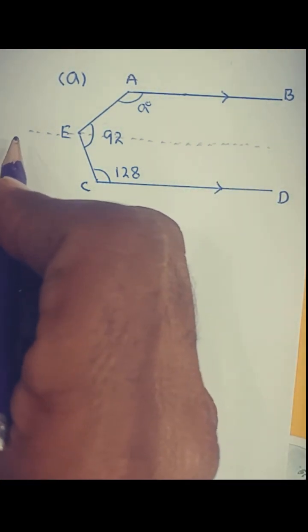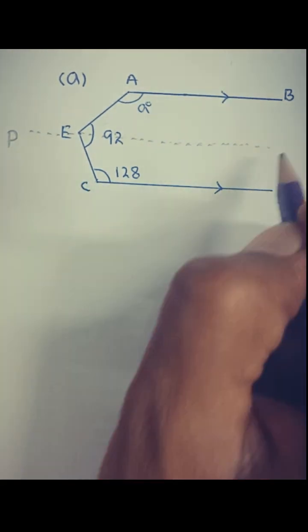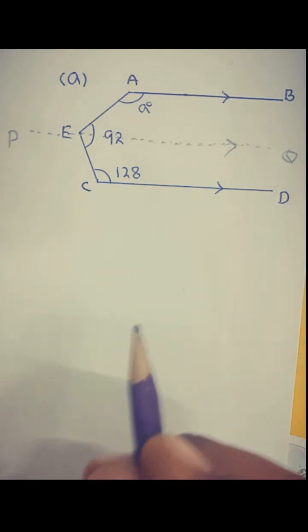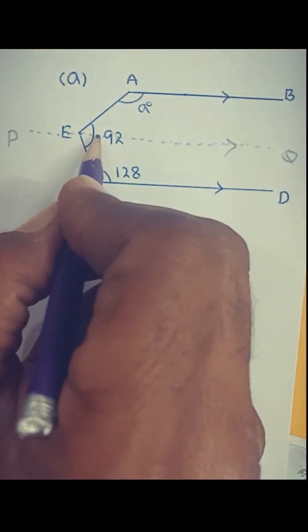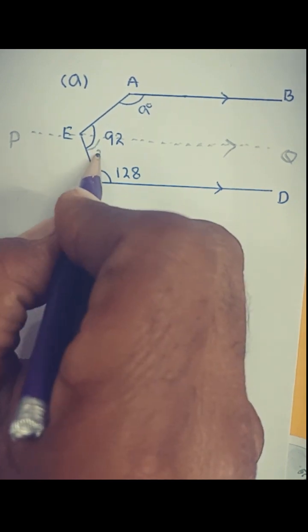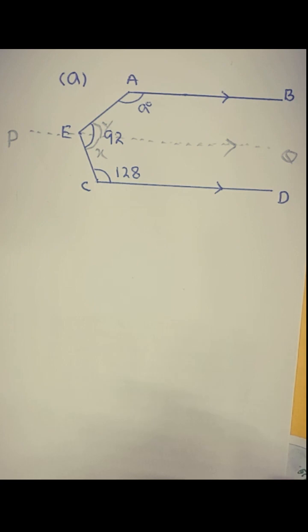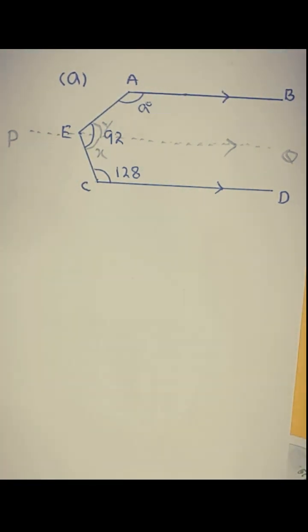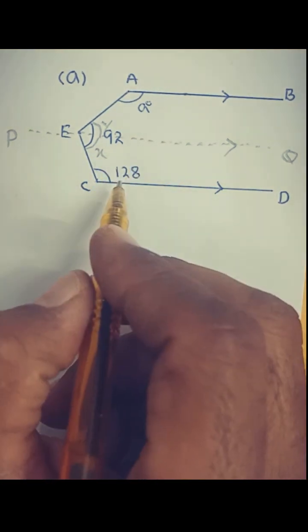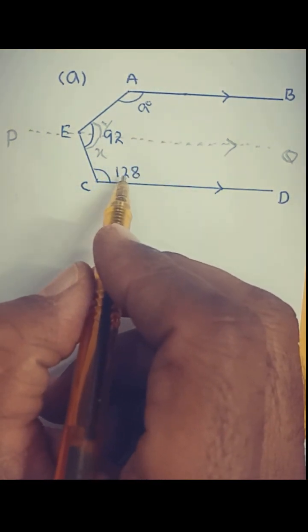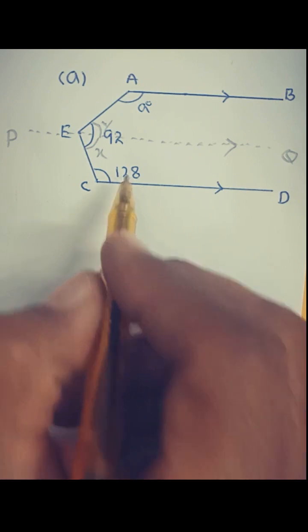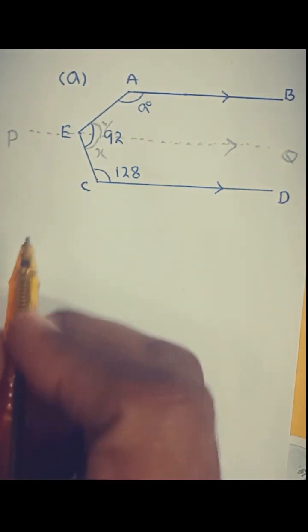We give this new parallel line the name PQ. Now we name the two formed angles as angle X and angle Y.